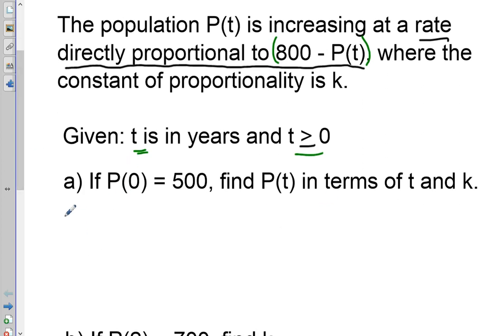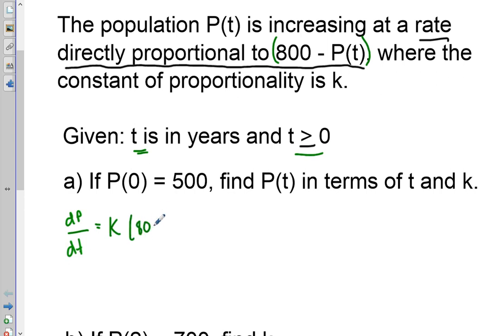With this information, we're going to first set up our differential equation. We know that dP/dt, the rate of change of P, is increasing and directly proportional, so we multiply by K, the constant of proportionality, to get dP/dt = K(800 - P). That is our differential equation — step number one.